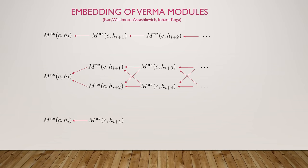These are the possible situations. Most Verma modules are irreducible. But if you're in the situation where you have a reducible Verma module, then it either has an infinite chain of Verma modules inside it, or a zigzag chain which corresponds to the minimal models, or just one Verma inside it that's irreducible. This will be helpful for us because we'll be interested in throwing away Verma modules that are irreducible.